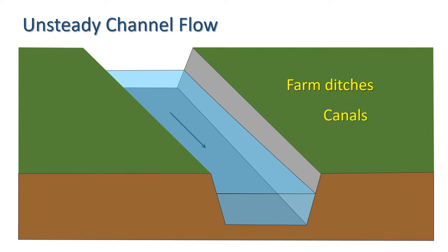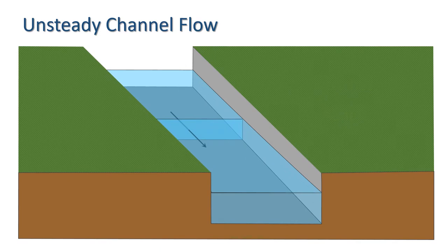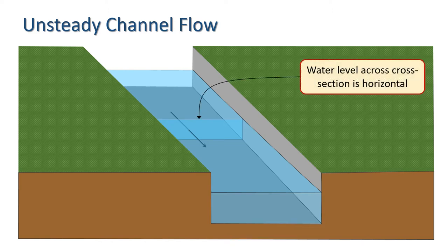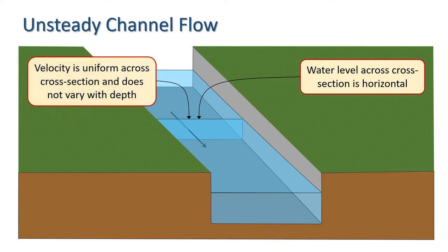Let's break this down in a little more detail. The assumption of one spatial dimension means that we have a single value for the depth at any point along the channel. Thus, we effectively assume the water level across the cross-section is horizontal. The assumption that vertical accelerations are negligible implies that the velocity is uniform across the cross-section and doesn't vary with depth.